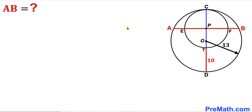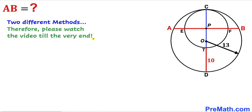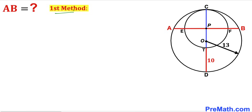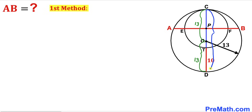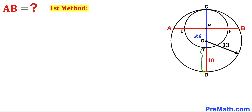Let's get started. I'm going to share two different approaches, so please watch the video till the very end. Here's our first method. The radius of the larger circle is 13 units, so OC is 13 units and OD is also 13 units. Therefore the whole diameter CD is 13 plus 13, giving us 26 units.